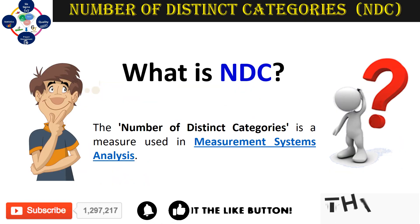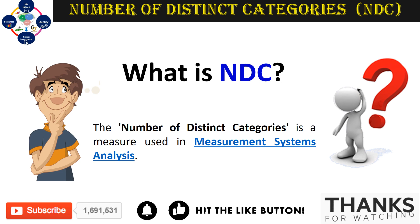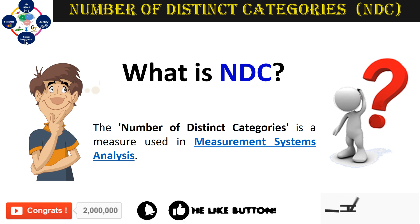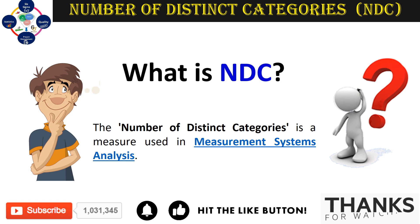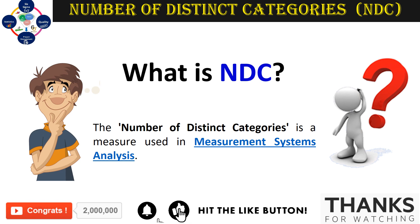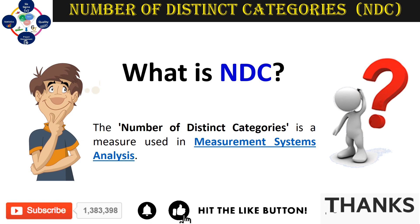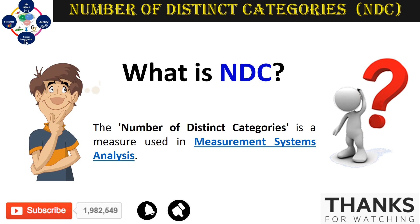What is NDC? The NDC is the Number of Distinct Categories. It is basically a measure used in measurement system analysis when we perform variable gauge R&R studies. It refers to the number of distinct categories, or non-overlapping intervals, that can be distinguished by the measurement system.